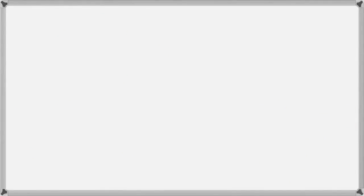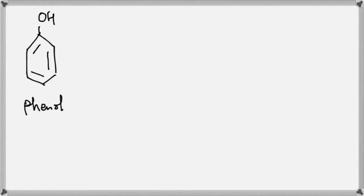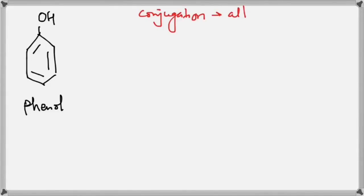Let's draw the resonance structure for this compound — we have an OH here and we call it phenol, a very important alcohol in class 12. Here is one important thing to keep in mind while drawing resonance: always look for conjugation. By conjugation I mean look for alternate double and single bonds — alternate sigma and pi bonds. We can see alternate double bond, single bond, double bond, single bond here, so we are going to draw the resonance structures for this compound.